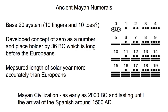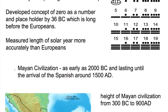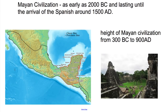The Mayan civilization goes as early as 2000 BC and lasts up until the arrival of the Spanish in about 1500 AD, so that's a 3500 year period. The height of the Mayan civilization was in the period from about 300 BC to 900 AD, and it's in the area of Guatemala and Mexico in Central America.